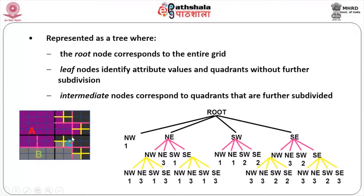Some quadrants do not require any subdivision; others do. In the North East, there are several divisions — further divided into North West, South West, North East, and South East sub-quadrants. The North West is further divided into 4 of them. These are your leaf or intermediate nodes. It is very complicated, but still very effective, and storage becomes much easier when you follow this technique.